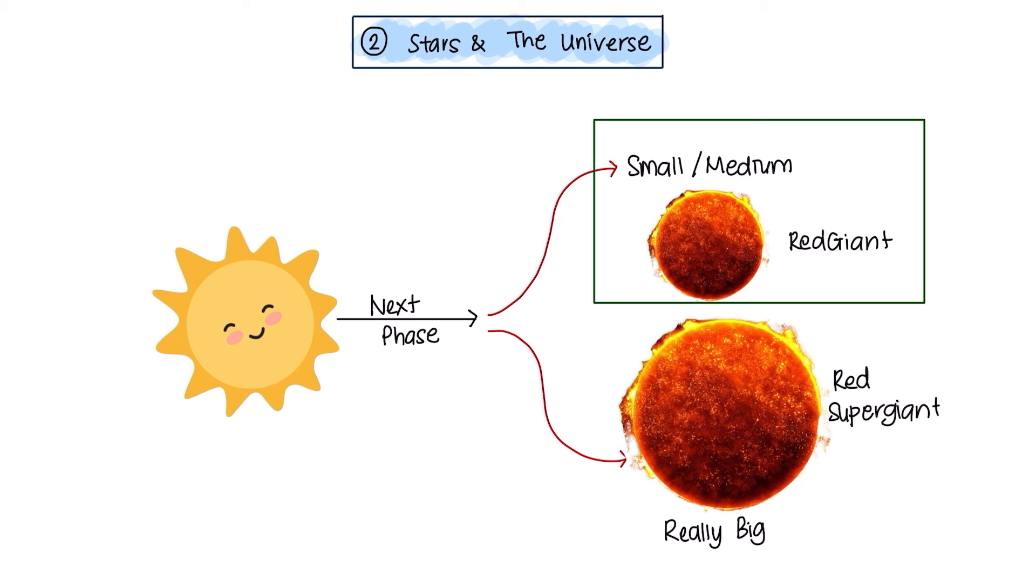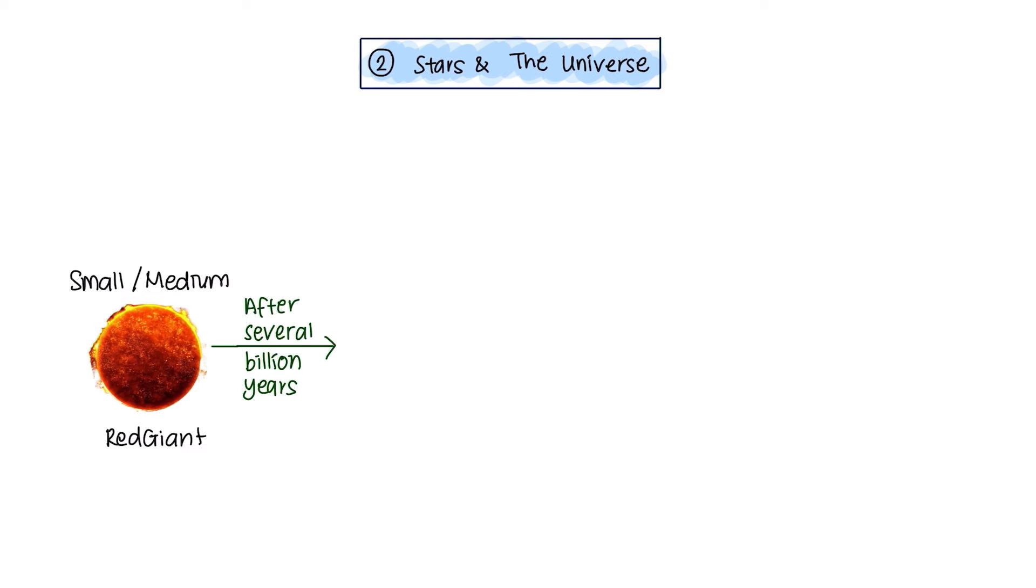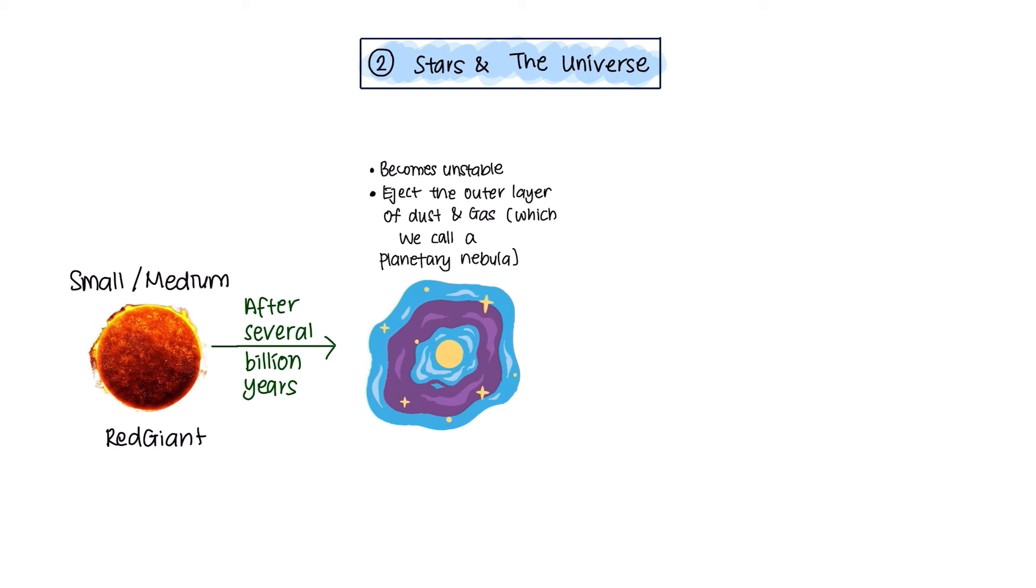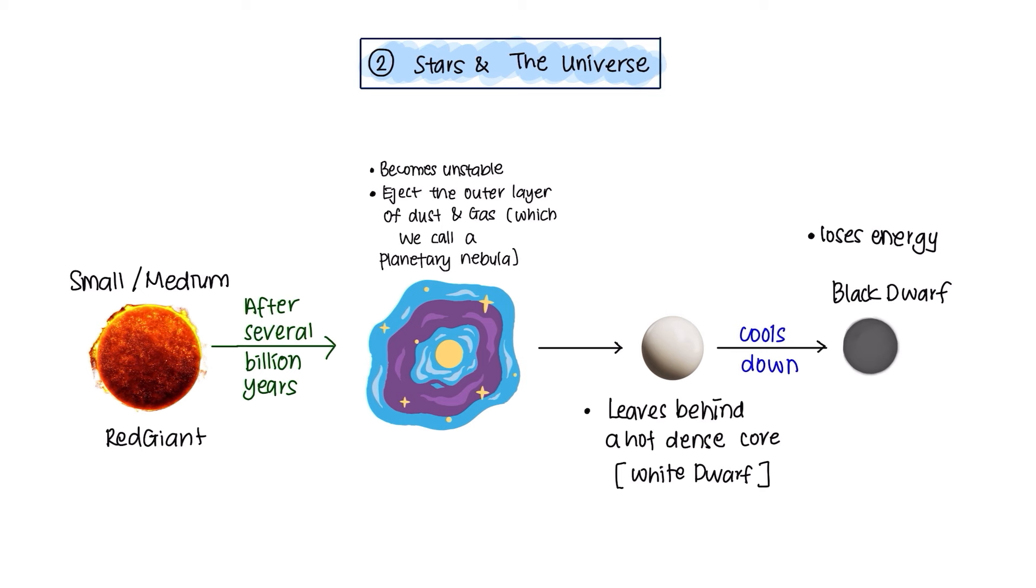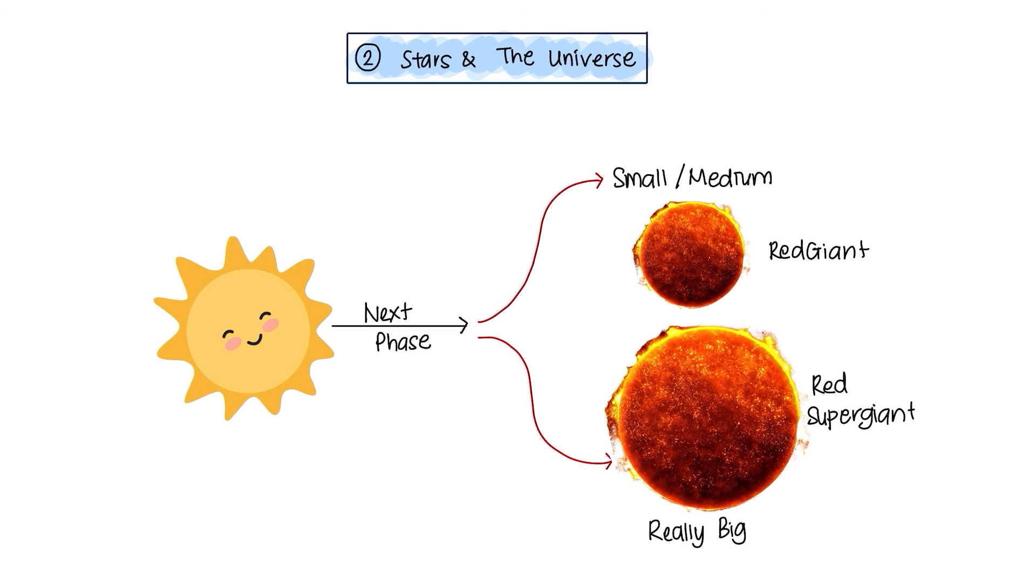Now, let's look at the red giant first. After several billion years, the red giant will become unstable and eject the outer layer of dust and gas, which we call a planetary nebula. This later leaves a hot, dense and solid core, which we call a white dwarf. Over time, the white dwarf cools down and start losing a significant amount of energy until it finally transitions into a black dwarf.